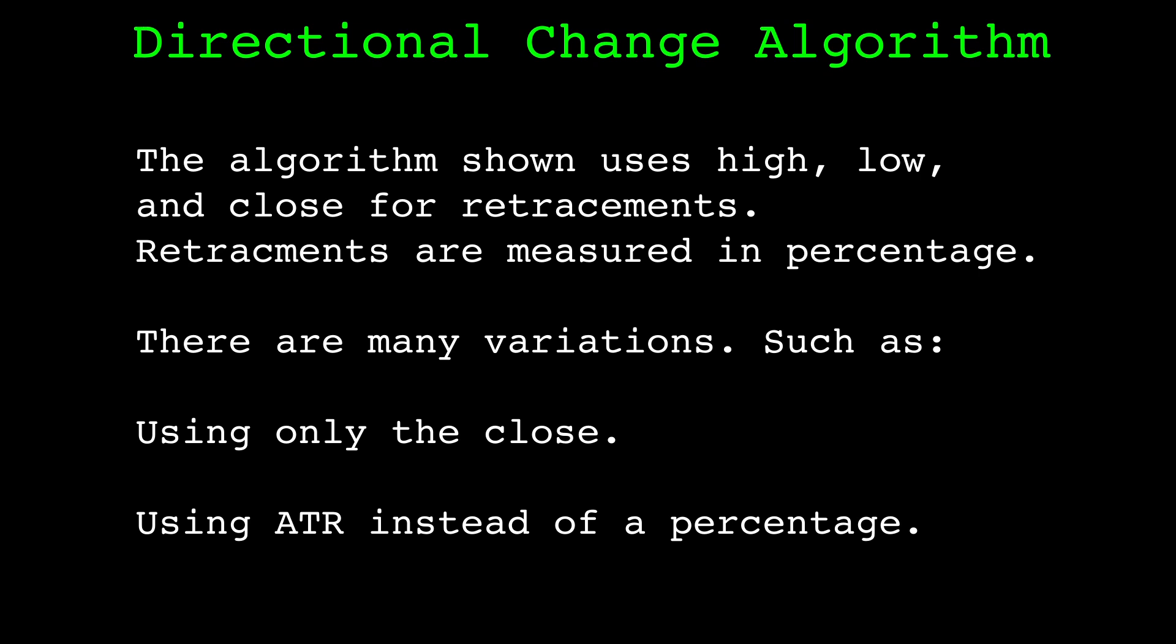Over time I've seen several variations of this algorithm. The version of the algorithm I showed uses the candle's high and low prices, and a percentage retracement. Using just the closing price is an option. A measure of volatility such as the average true range could be used to quantify retracements instead of the percentage.